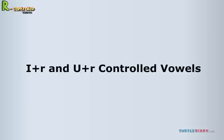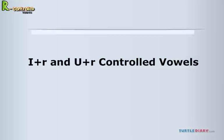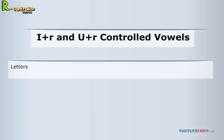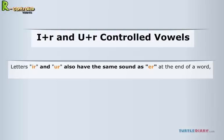I plus R and U plus R, controlled vowels. Letters I-R and U-R also have the same sound as E-R at the end of a word, or before another consonant. Try reading the following words to hear the E-R sound.